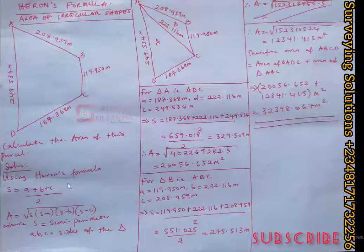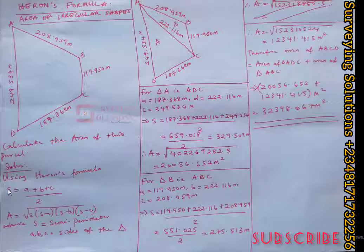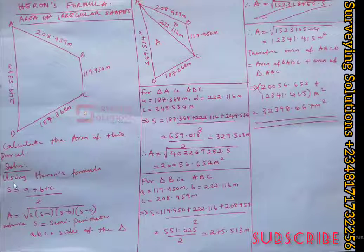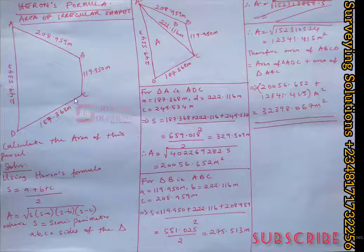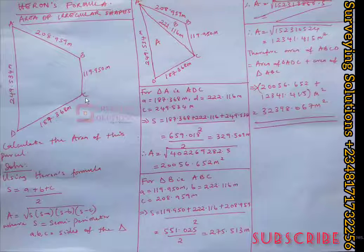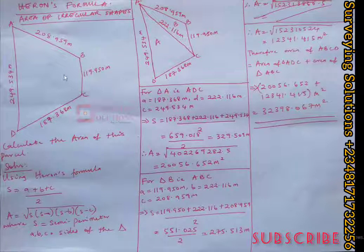In Heron's Formula for calculating area, we have two parameters to note: the semi-perimeter, which is S, and of course the area, A. Now, when you want to apply Heron's Formula, you have to divide your irregular shape into triangles, because you'll have more than one triangle from an irregular plot.